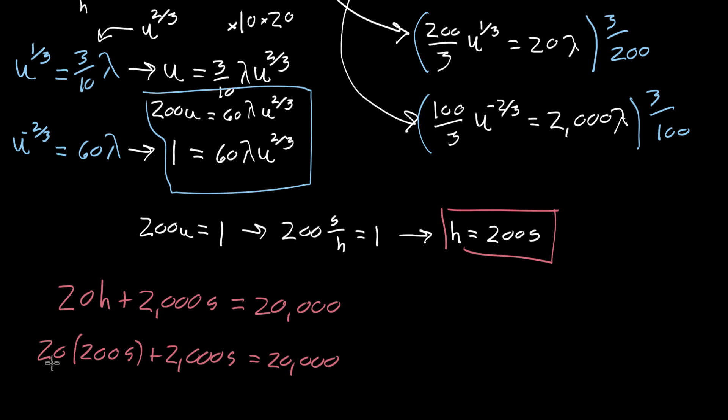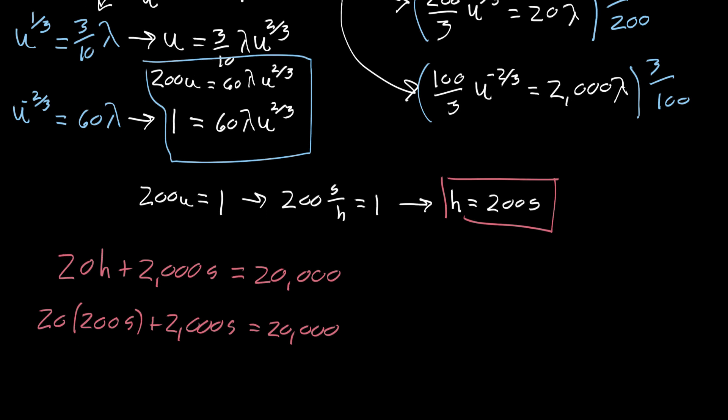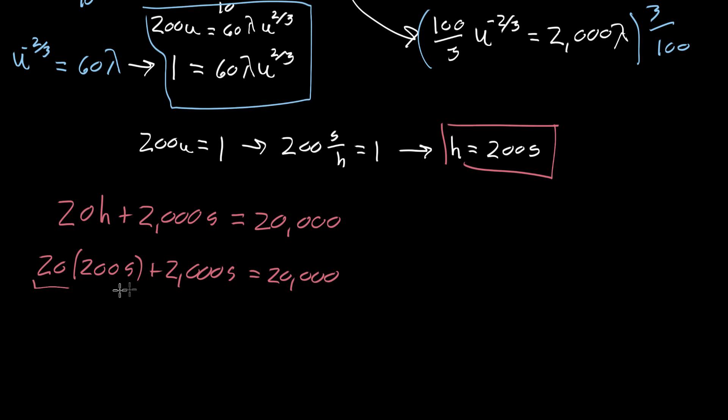And now this right side, 20 times 200 is equal to 4,000. And I'm just gonna go ahead and kind of write, so this here is 4,000S. So the entire right side of the equation simplifies to 6,000. 6,000 times S is equal to 20,000. And when those cancel out, what that gives us is S is equal to 20 divided by 6, which is the same as 10 divided by 3.